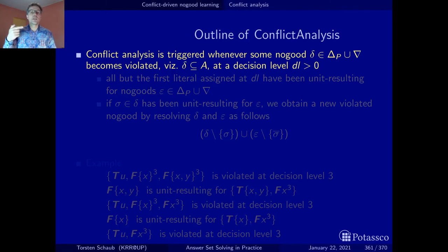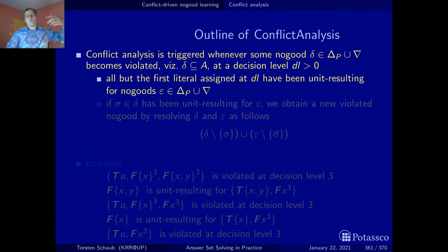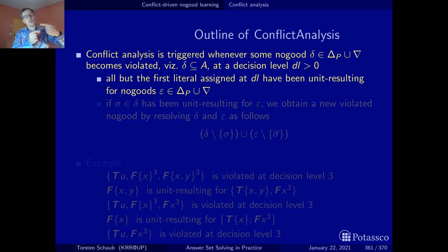Let us recall a few properties of the construction on which the algorithm relies. First of all, all but the first literal on a decision level have been unit resulting for some no-good. We finish the last decision level because unit propagation doesn't work anymore, then a new decision level starts with a non-deterministic choice. Once this choice is made, we start unit propagation and all the literals that follow this first choice are unit resulting for a no-good.